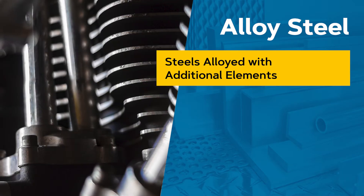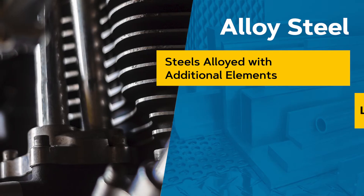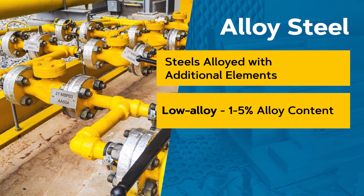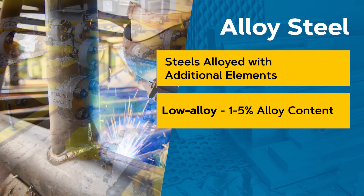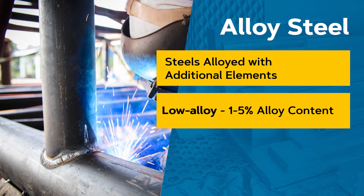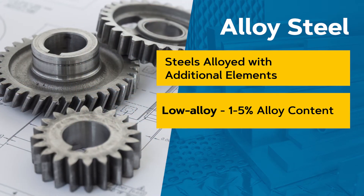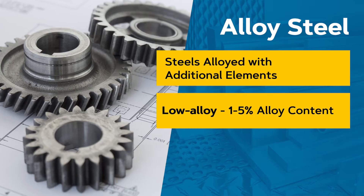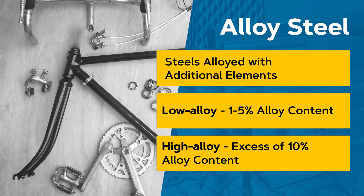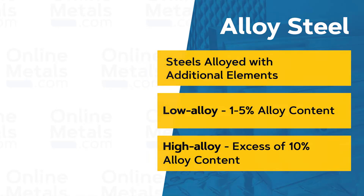Alloy steels are broken down into two groups: low alloy and high alloy. Low alloy steels range from 1 to 5 percent in alloy content and are easily weldable with the appropriate precautions. High strength low alloy steels are not made to chemical composition but to mechanical properties. High alloy steels have alloy levels in excess of 10 percent, giving them outstanding properties.